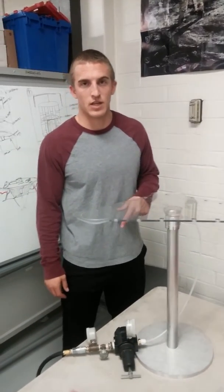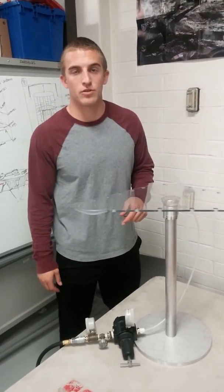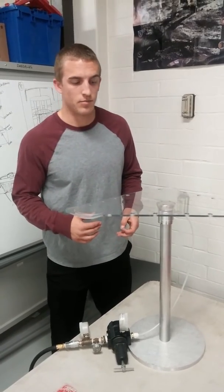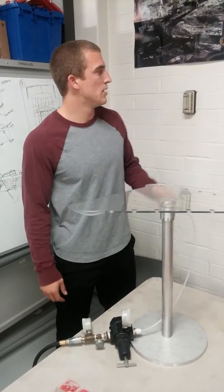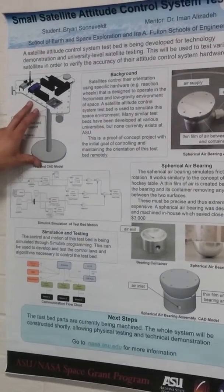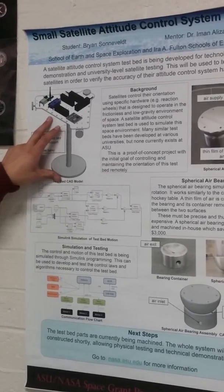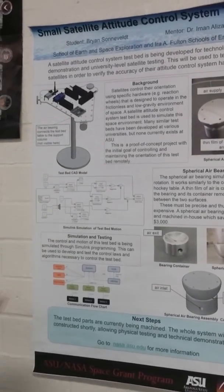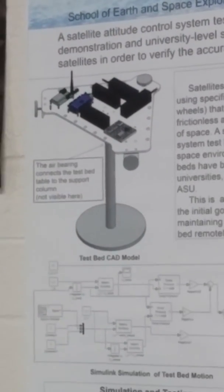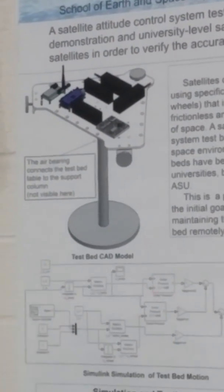This is a small satellite attitude control system test bed. It's used to verify the attitude control system of a small satellite. If you look at this poster, this is what the full design is going to look like. What you see in front of me is only part of the way to build it. You can pause the video if you'd like to get an overview of this project, if there's anything that I didn't explain in detail enough.